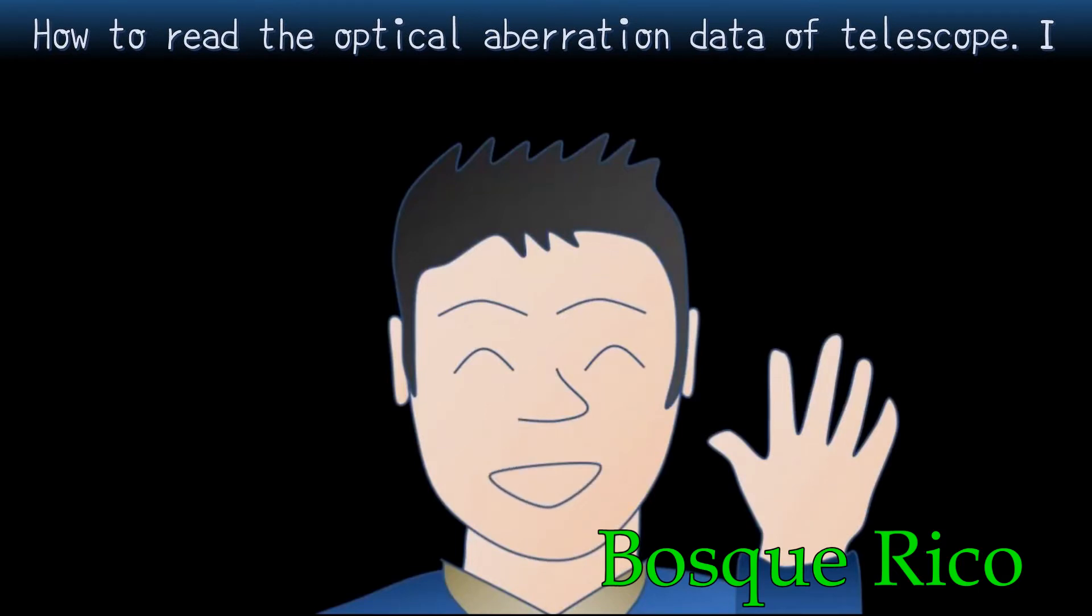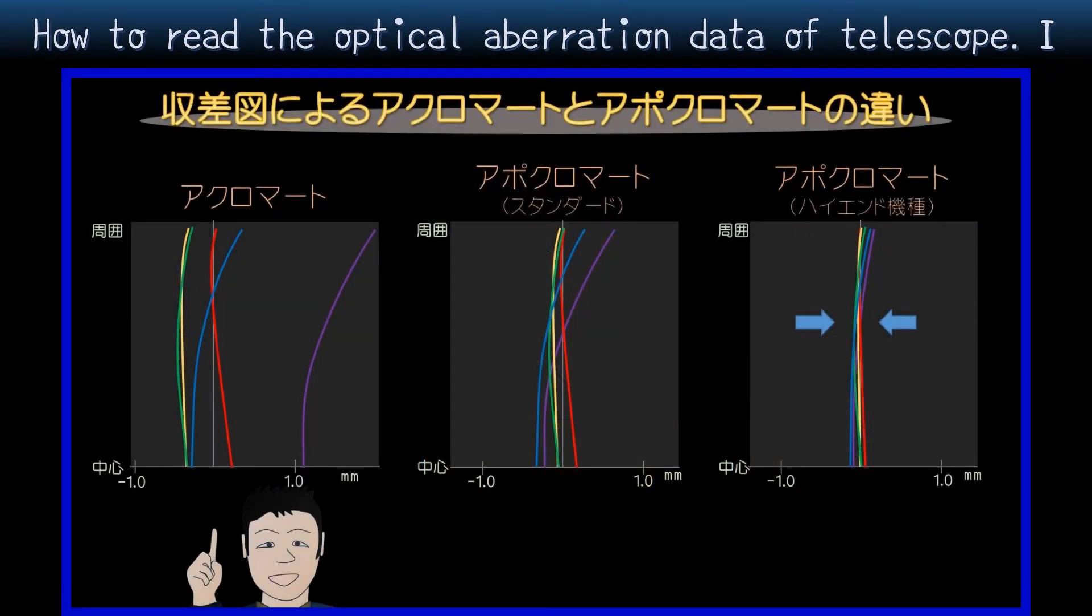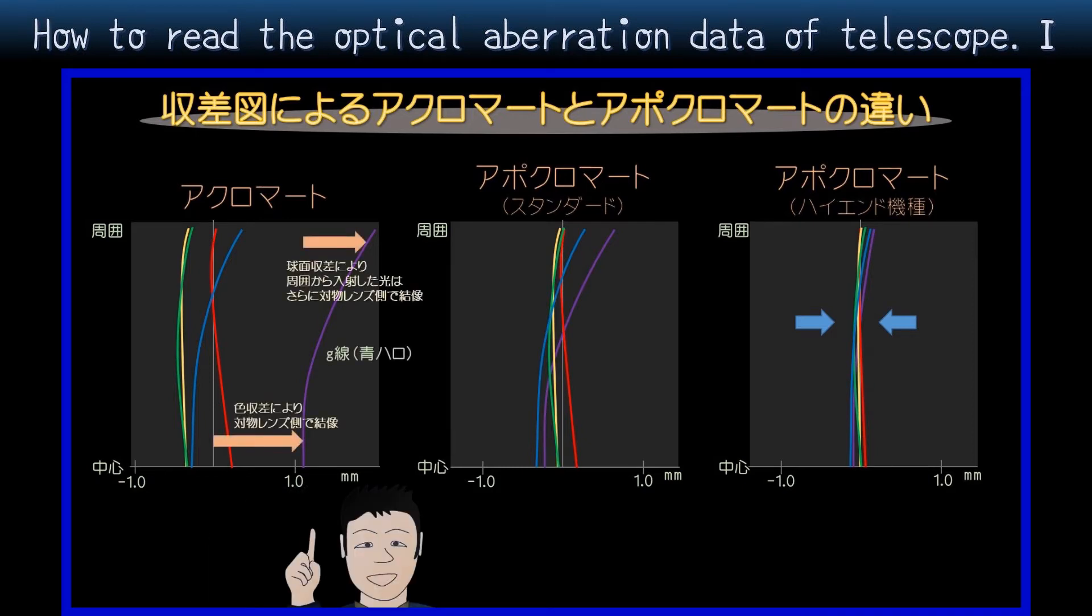Hello, I'm Bosuka Rico. Today I'll be talking about how to read optical aberration data of telescopes. So far, I have taken up this theme several times. However, they were all in Japanese, so this time I'm speaking in English.